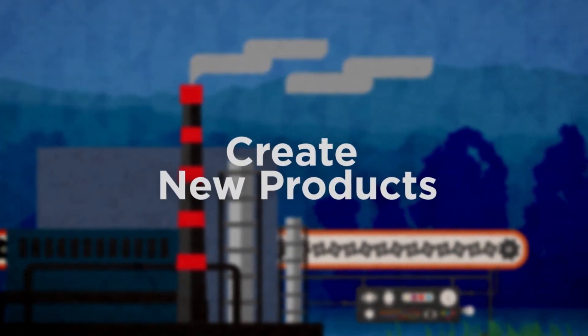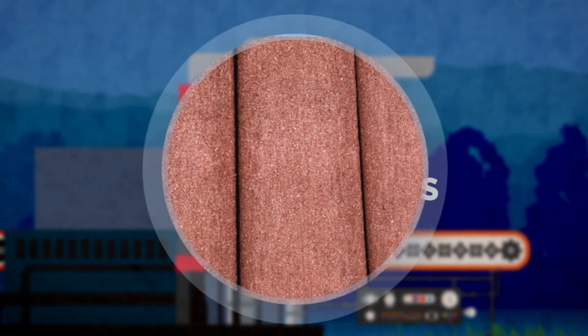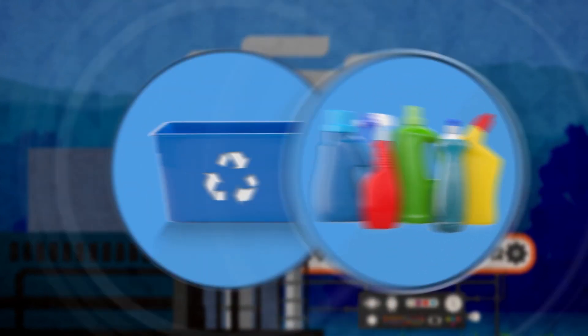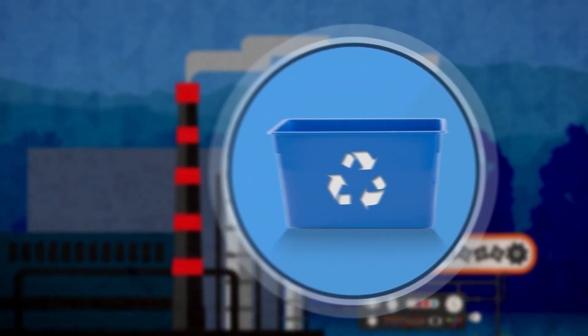Recycled plastic is used to create new products like plastic composite lumber, clothing, carpeting, detergent bottles, and even our curbside recycling bins themselves.